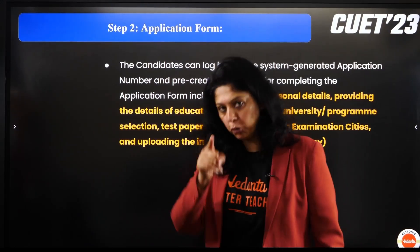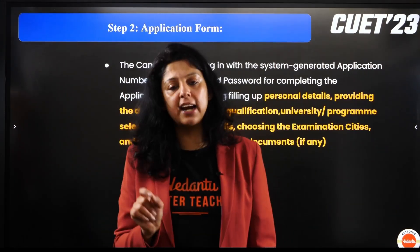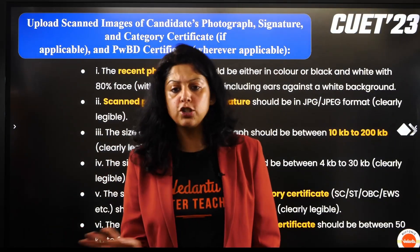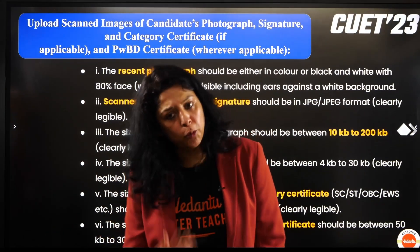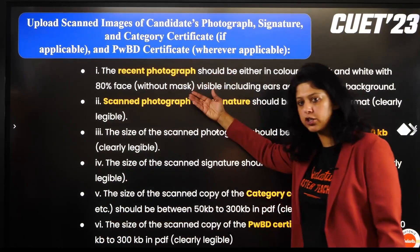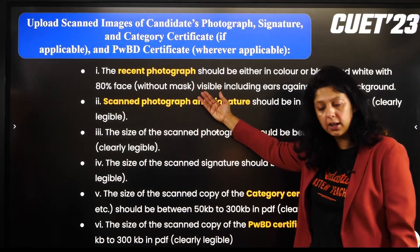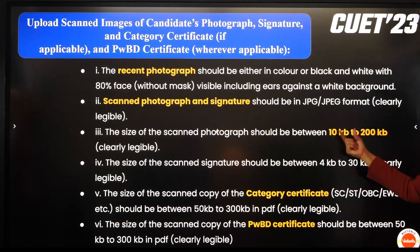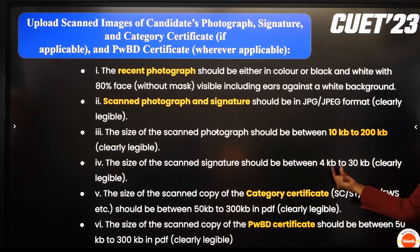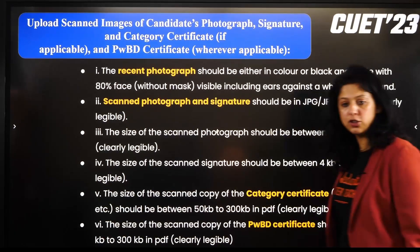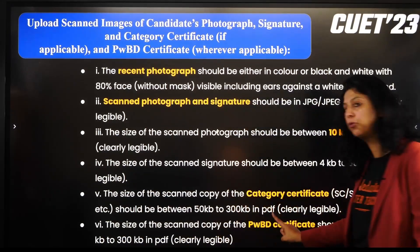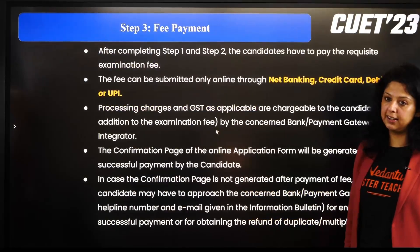Brochure में exactly बताया है कि OBC certificate और SC certificate कैसा चाहिए। आपकी recent scanned photograph होनी चाहिए — mask वगैरह नहीं लगा होना चाहिए, size 10KB to 200KB। Signature 4KB to 30KB होना चाहिए। Scanned copy of category certificate और person with disability certificate भी रखनी है।